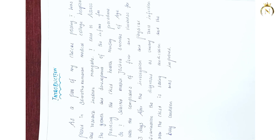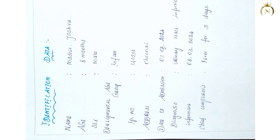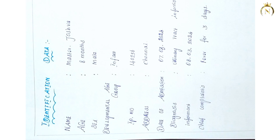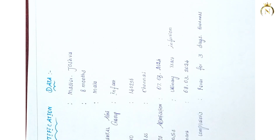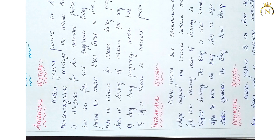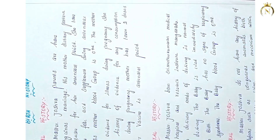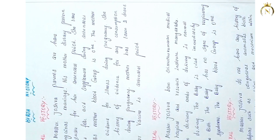In the growth and development documentation, you have to mention first the introduction, after that identification. After identification, you have to mention the antenatal history, terminal history, and maternal history. During the birth history section, you have to mention those details as well.